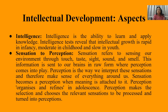Perception organizes and refines sensations in adolescence — when you reach that stage, perception takes an organized and refined form. Perception makes the selection and chooses the relevant sensations to be processed and turned into perception. Not every sensation needs to be given meaning, and perception tells us which sensations we have to give meaning to.